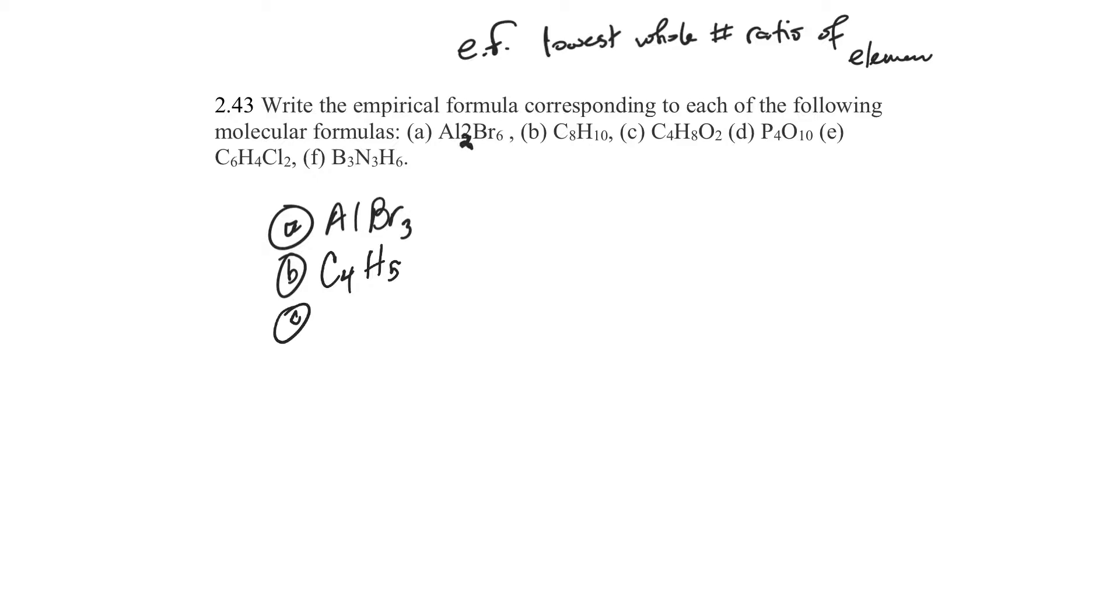C, I've got a four, an eight, and a two, so that would be a two, so it'll be C2H4O. D is P4O10, so that would be two, so this would go down to P2O5.